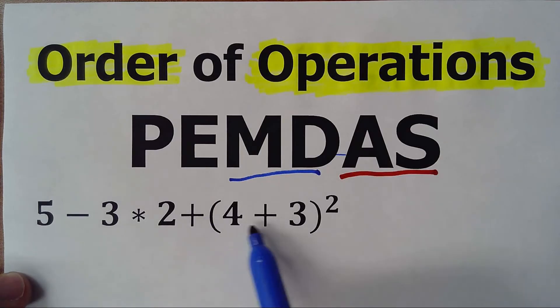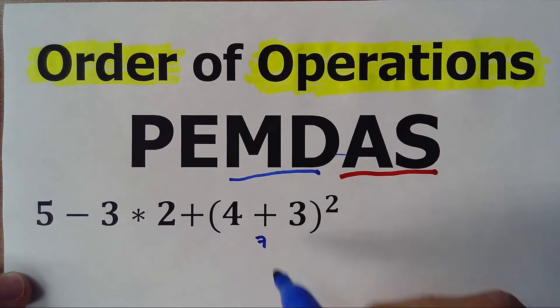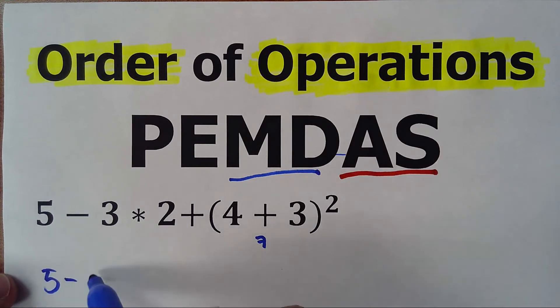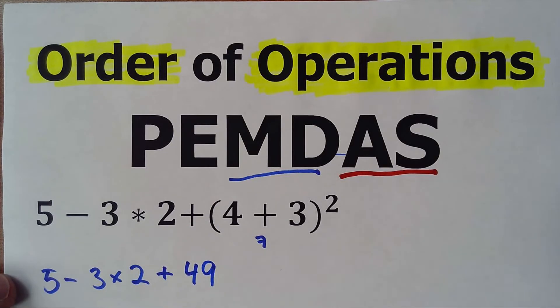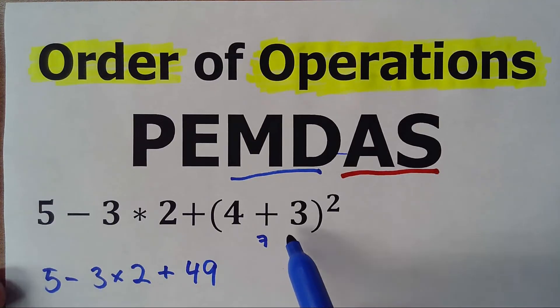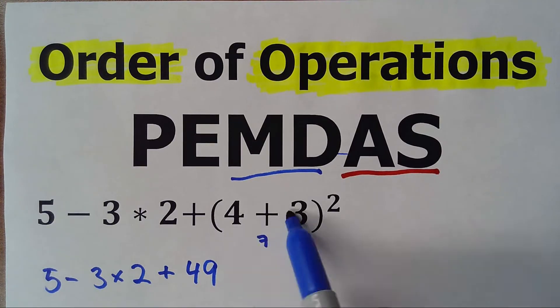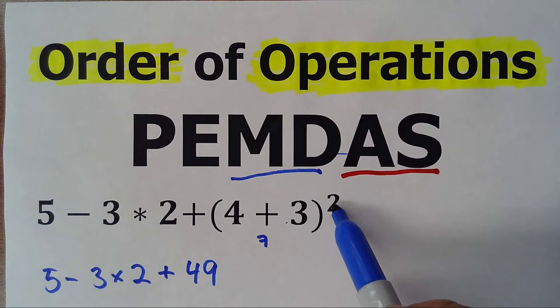So parentheses 4 plus 3 is 7, and 7 squared is 49, so we have 5 minus 3 times 2 plus 49. Okay, that's the first, I did basically two steps in one, so I did the addition and I did the exponent, those two steps at the same time.